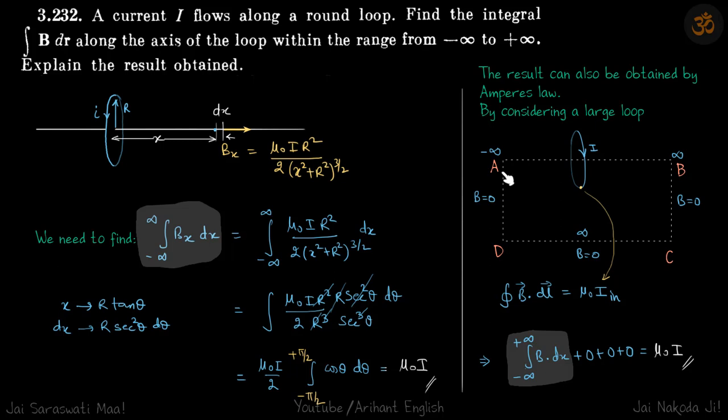So let's extend this into a rectangular loop, and all these distances A, D, C, and B are at infinity.